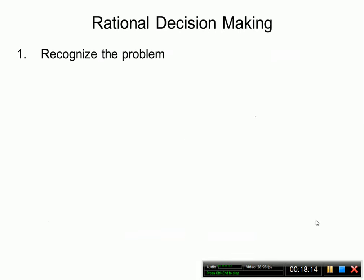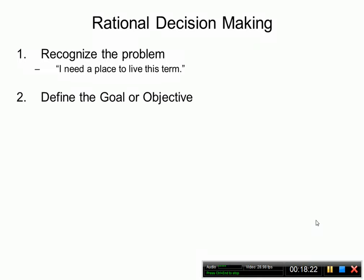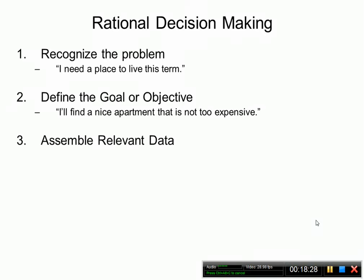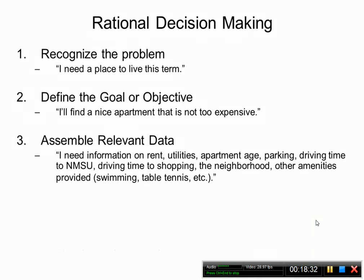Let's talk about rational decision-making with an apartment example. Step one: recognize the problem — I need a place to live this term. Step two: define the goal — find a nice apartment that is not too expensive. Step three: assemble relevant data — I need information on rent, utilities, apartment age, parking, driving time to NMSU, driving time to shopping, the neighborhood, and other amenities such as swimming or table tennis.